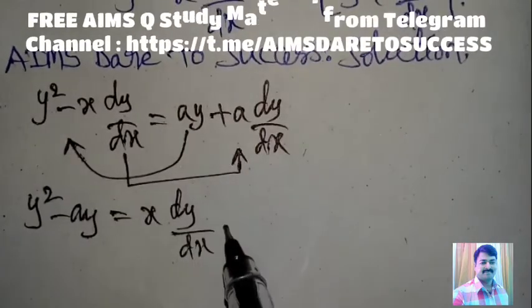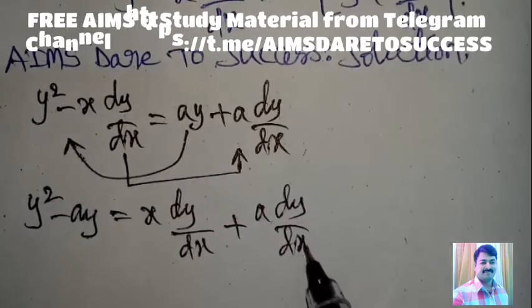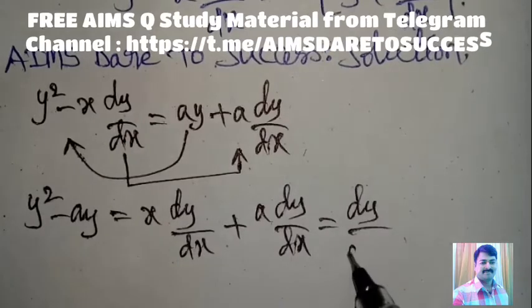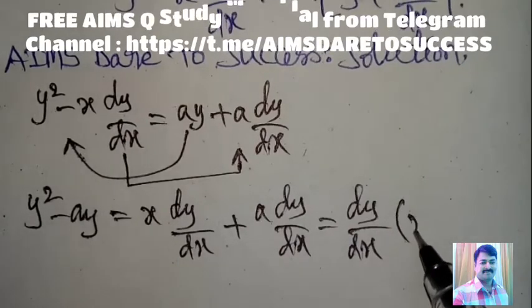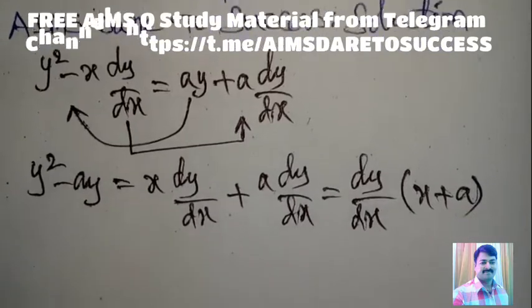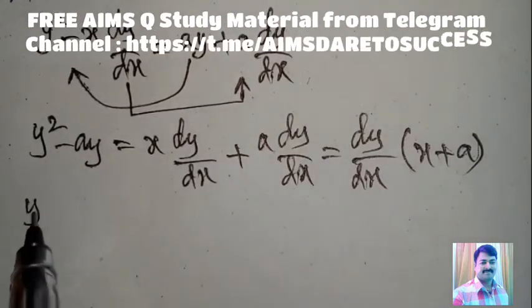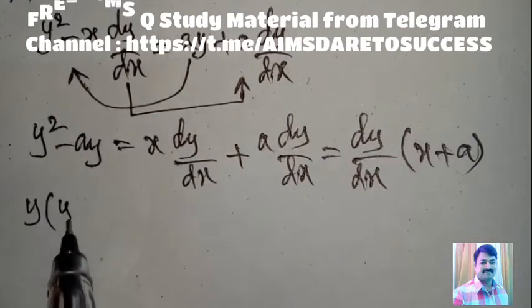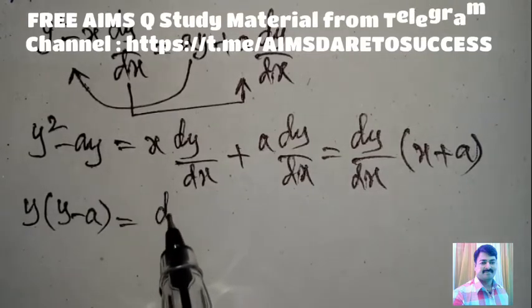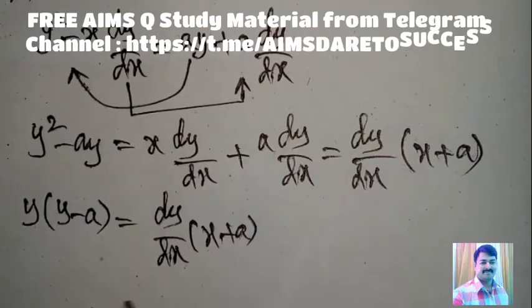Taking dy/dx as common on the right side, we get (x + a). On the left side, y is common: y(y − a) = (x + a)(dy/dx).